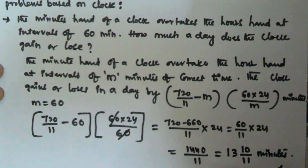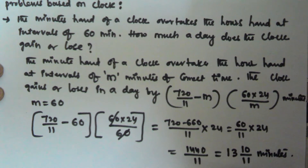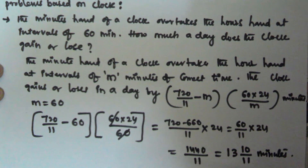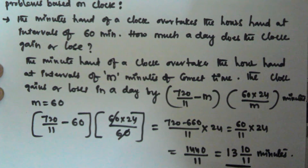So if the minute's hand overtakes the hour's hand at the interval of 60 minutes, the clock gains or loses 130 and 10/11 minutes in a day. I hope you got this one. Thank you very much for watching this video, and please subscribe.